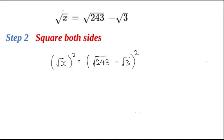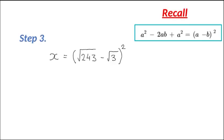Now remember, the square root of x all squared is equal to x. So we can replace this as x equals the square root of 243 minus square root of 3, all squared. This is the popular formula, squaring a minus b. So we're going to get a squared minus 2ab plus a squared.